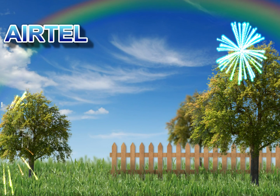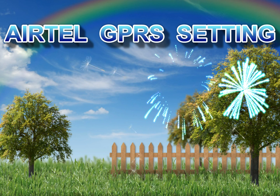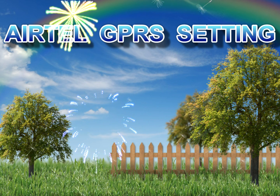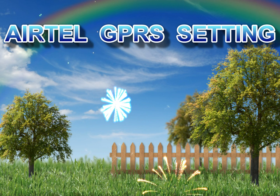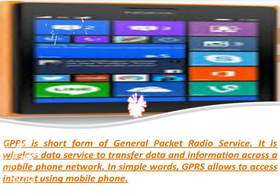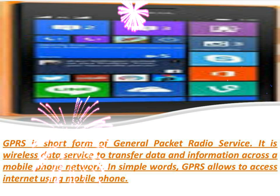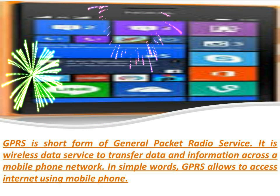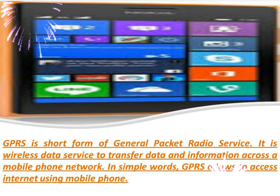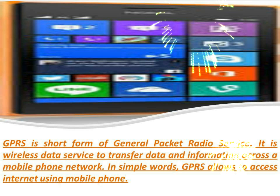Videocon GPRS Settings. GPRS is short for General Packet Radio Service. It is a wireless data service to transfer data and information across a mobile phone network. In simple words, GPRS allows access to the internet using a mobile phone. It is used for 2G, 3G, and 4G internet data services to access the internet on a mobile phone. It is also needed for multimedia messaging or MMS and various applications.